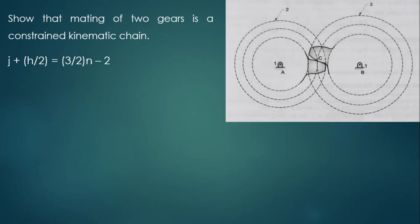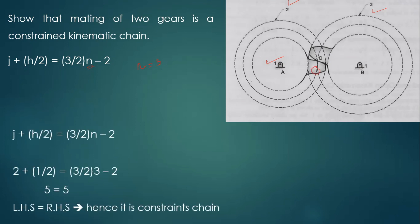Now consider a higher-pair example with 3 links. Gear A and Gear B contact at point C — this is a point contact, so h = 1 (one higher pair). Link 2 is connected to link 1 (joint 1), and link 3 is connected to link 1 (joint 2), giving j = 2. Applying Equation 3: j + h/2 = 2 + 0.5 = 2.5... substituting all values gives LHS = RHS = 5, so the given kinematic chain is constrained.